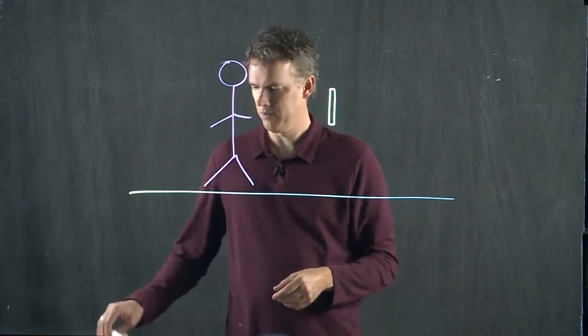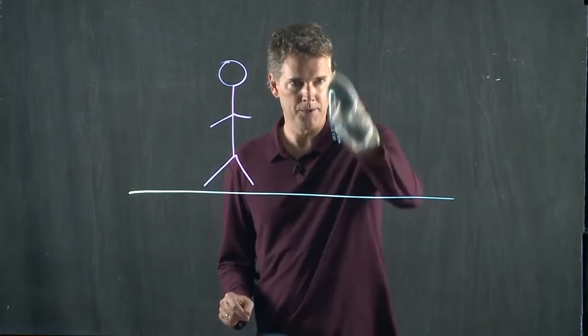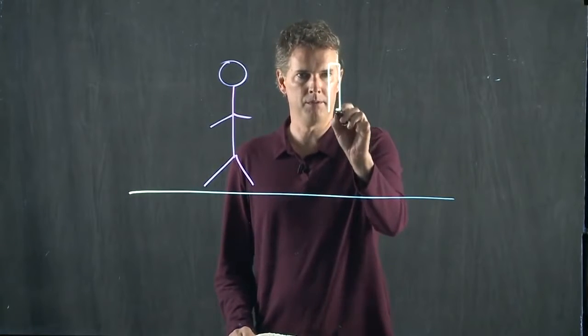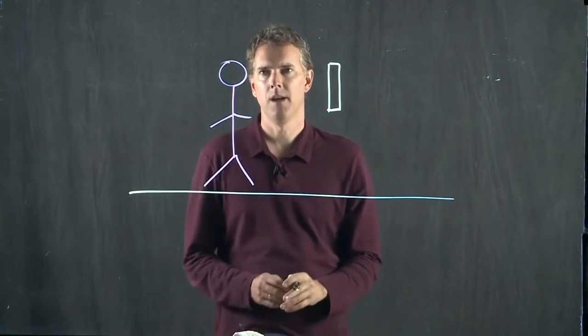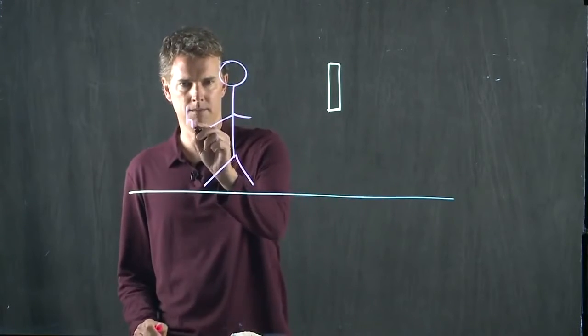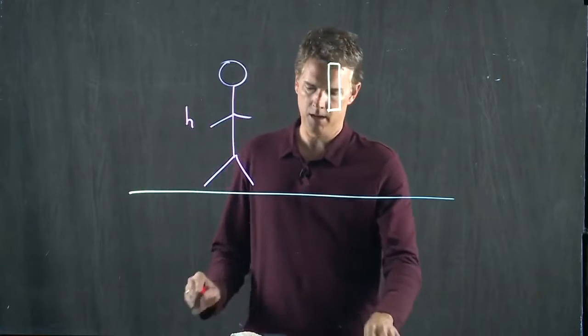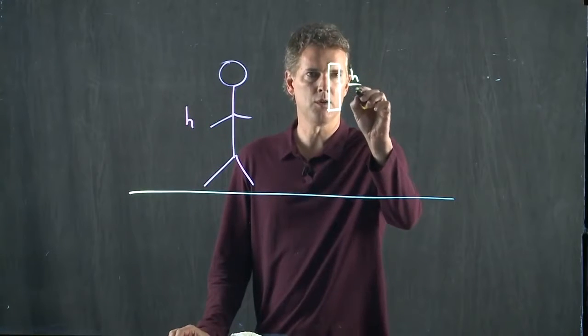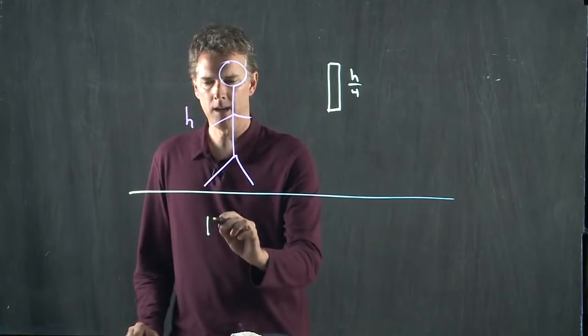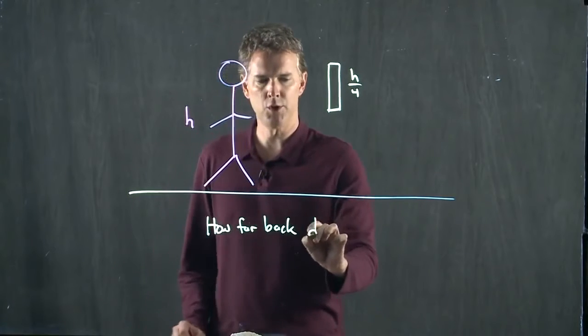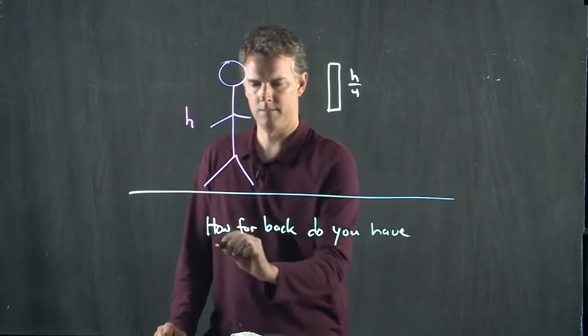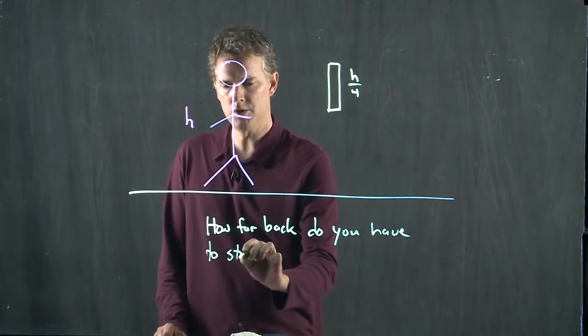Let's move this mirror up just a little bit so it's even with the head of the person. And the question is the following: If you are height h, and this thing is h over 4, how far back do you have to stand to see your shoes?